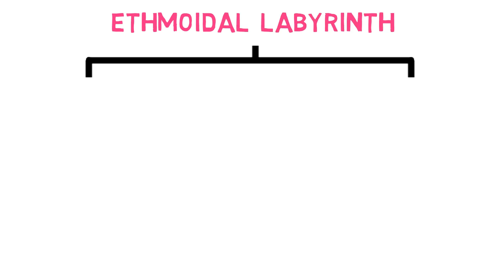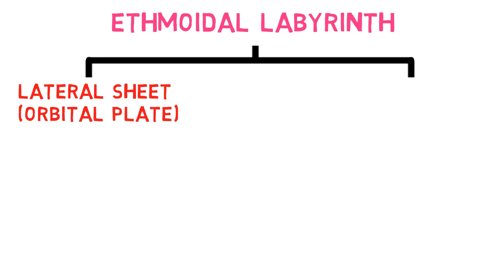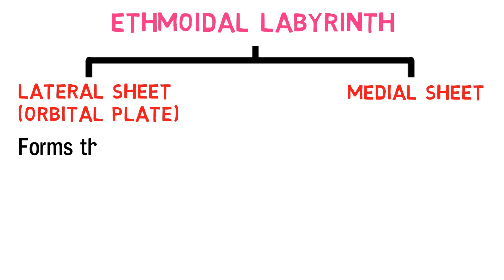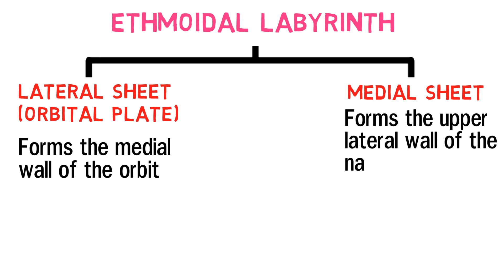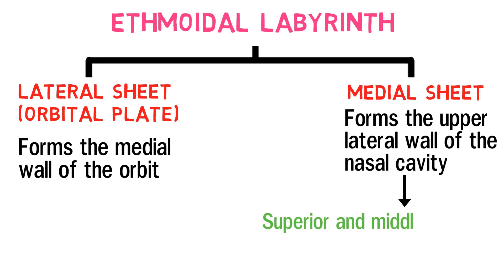The ethmoidal labyrinth is made up of two sheets of bone: the lateral sheet, or the orbital plate, and the medial sheet. The lateral sheet forms the medial wall of the orbit, whereas the medial sheet forms the upper lateral wall of the nasal cavity. From this sheet, the superior and middle conchae extend into the nasal cavity.